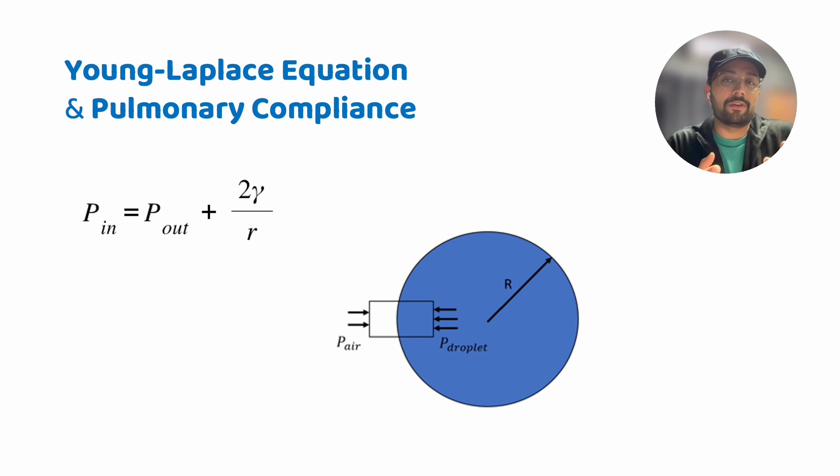So if surface tension within the alveolar membrane is gamma, then 2 gamma by R where R is the radius of the alveoli, assuming that alveoli has a spherical symmetry to it.